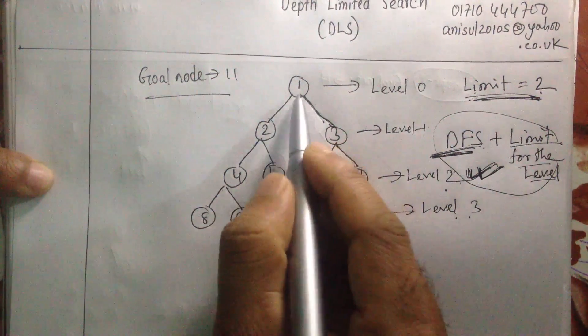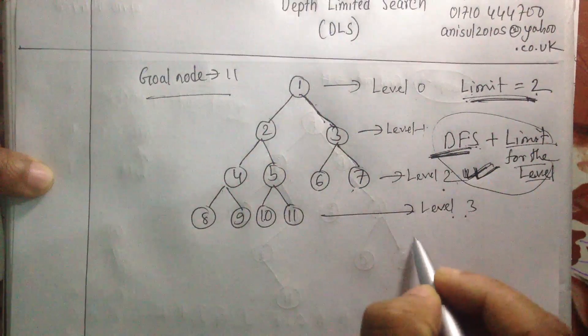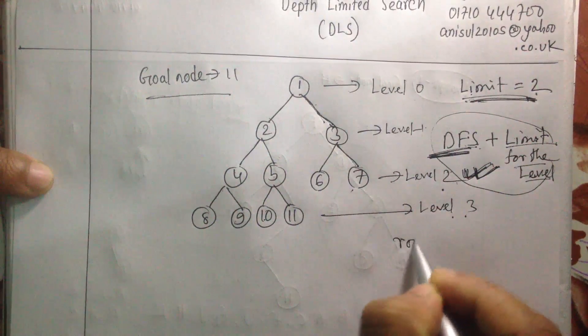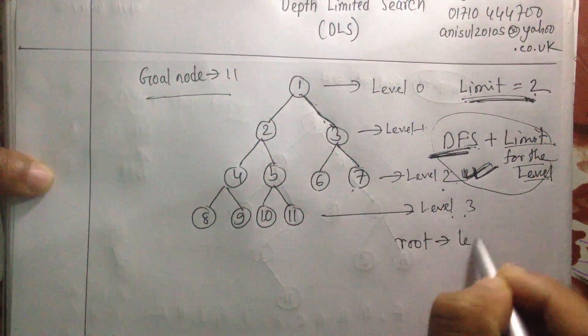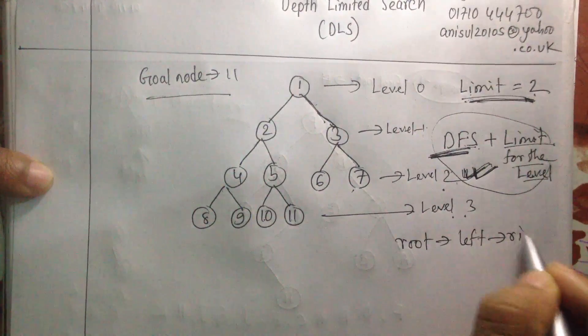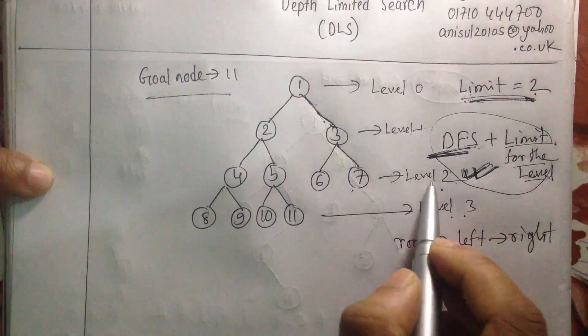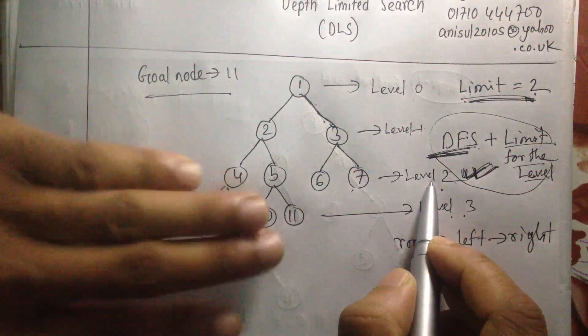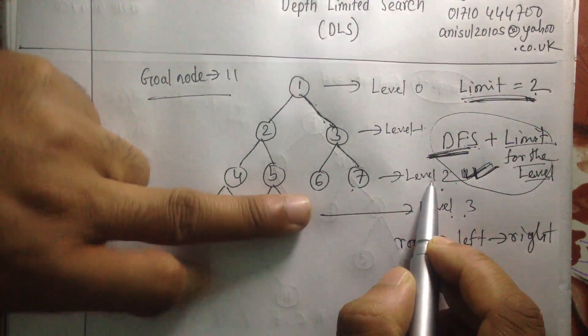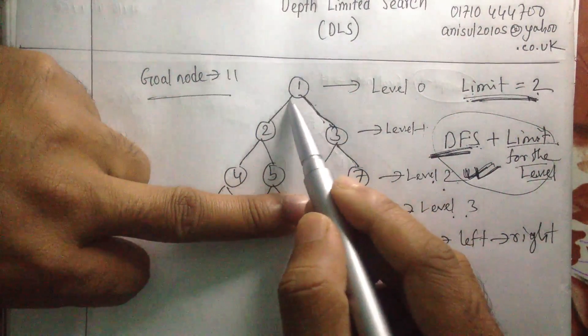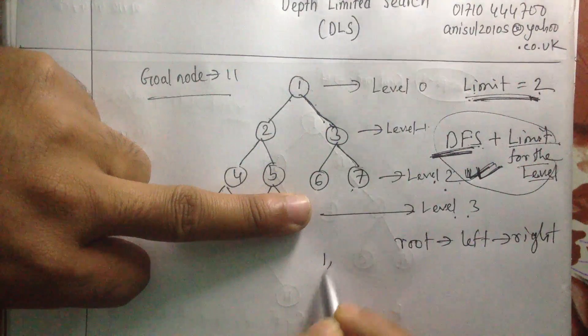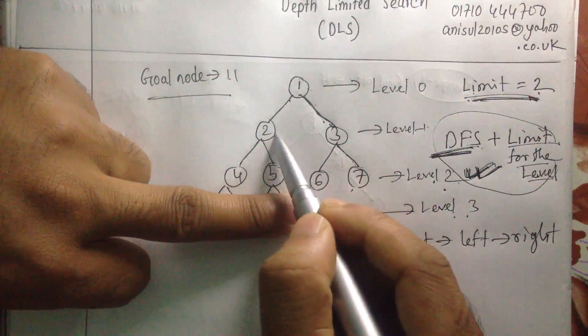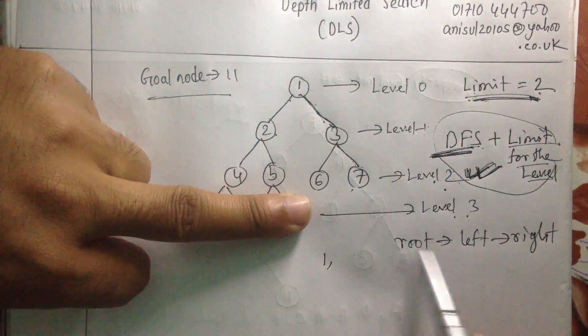So let's get started. We're going to start from 1 because in DFS you have already seen that you can start with the root node. Then you can go to the left. Then you can go to the right. But remember our level is 2. So we cannot go to the level 3. We cannot visit this. So our root node is 1. We're going to start from 1.